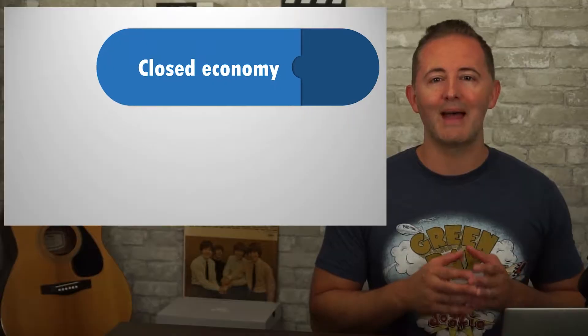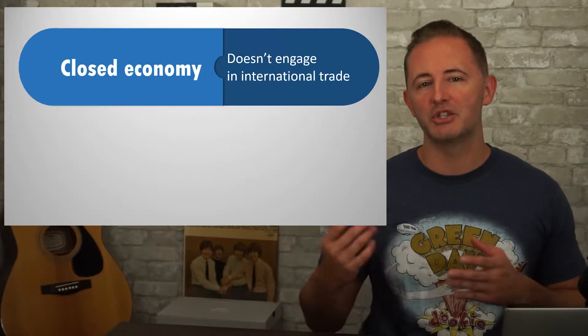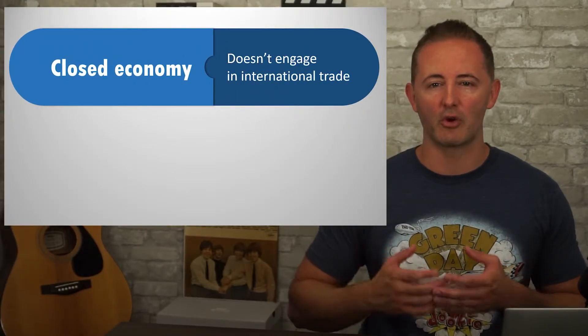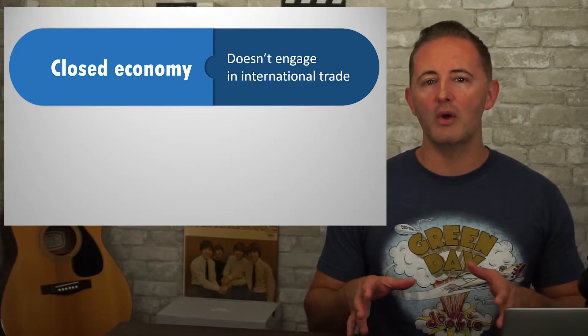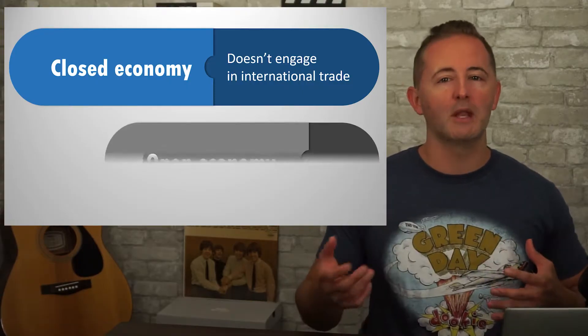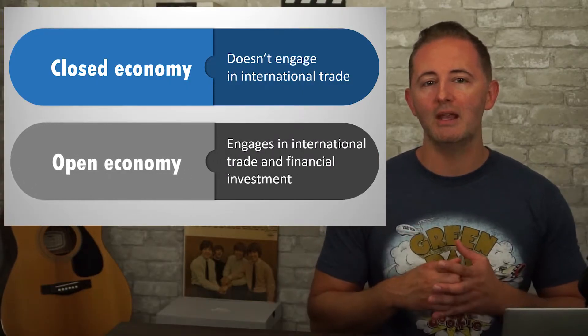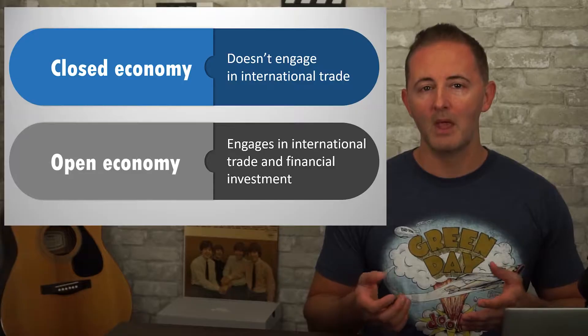This unit is where we finally admit that there's more than one country on earth. Before this, we've often pretended that we were in a closed economy that didn't engage in trade with anybody outside of their own economy. This unit, though, is about open economies where international trade and financial investment occur.